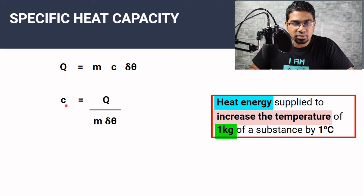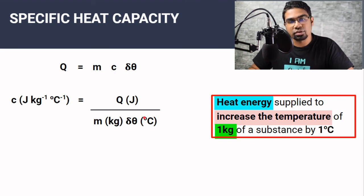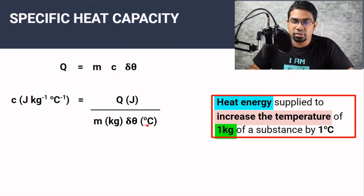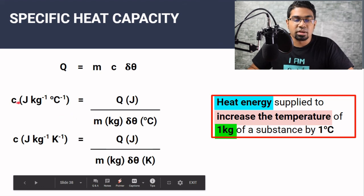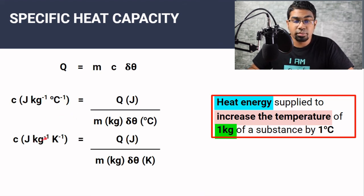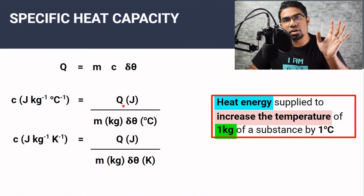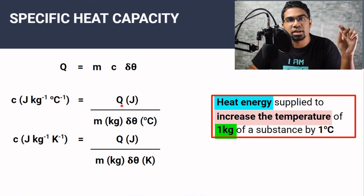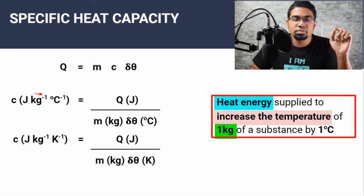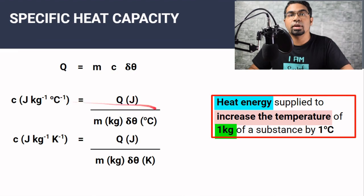The formal definition of specific heat capacity is the heat energy supplied to increase the temperature of 1 kg of a substance by 1 degree Celsius. Rearranging the heat energy formula, specific heat capacity equals Q over M delta theta. The units are joules per kilogram per degree Celsius, or joules per kilogram per Kelvin. They may also be given as joules per gram per degree Celsius, joules per gram per Kelvin, or kilojoules per kilogram per degree Celsius. Just match the mass units in the formula to the units given — follow the units and you will get the correct answer.